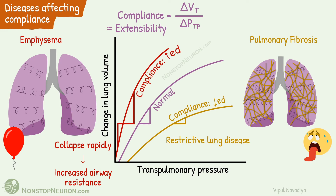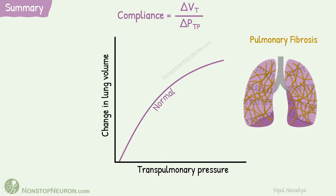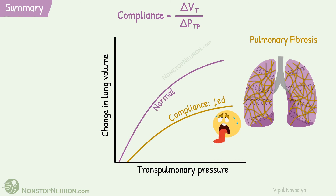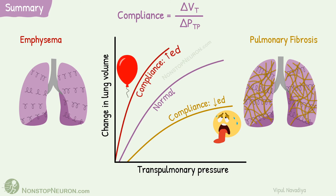That completes the topic. Let's have a quick summary. Compliance is change in lung volume per unit change in transpulmonary pressure. Diseases like pulmonary fibrosis make it difficult to expand lungs, so compliance is decreased. In emphysema, destruction of lung tissues makes the lung floppy and easy to inflate, so compliance is increased.